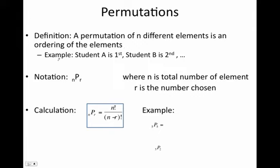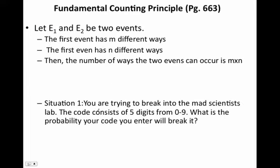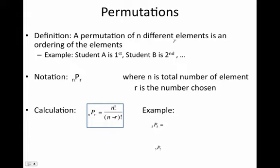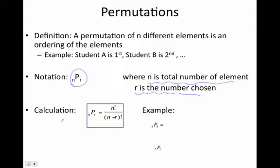Now here's another tool: permutation. We figured out how to look at a situation like our code example where you have multiple events with different numbers of ways for each. Now let's look at permutations. A permutation is an arrangement where you have a certain number of elements and you're trying to order those elements. We have notation for it. Simply put, a permutation is just a different ordering. The permutation calculation handles situations where you have a total number of elements and you're trying to choose a certain number of those — how many different orders could that go?